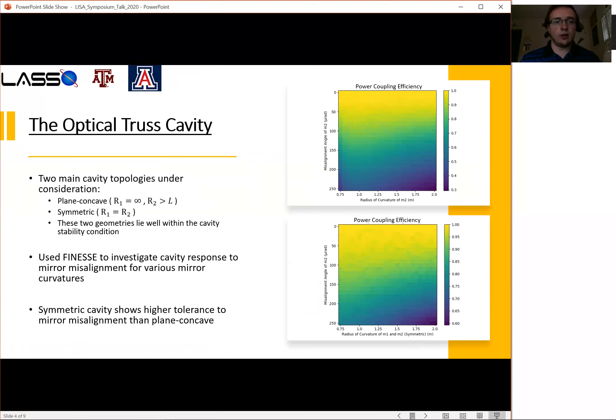Most of the work that has been done by the LASSO lab has been on the development of the optical truss cavity. Two main cavity topologies are under consideration: one being the plane-concave geometry where the cavity input mirror is flat and the back cavity mirror has some curvature where the radius of curvature is greater than the length of the cavity. The other geometry we're considering is the symmetric cavity where the curvature of both mirrors are matched, and these two geometries lie well within the cavity stability condition.